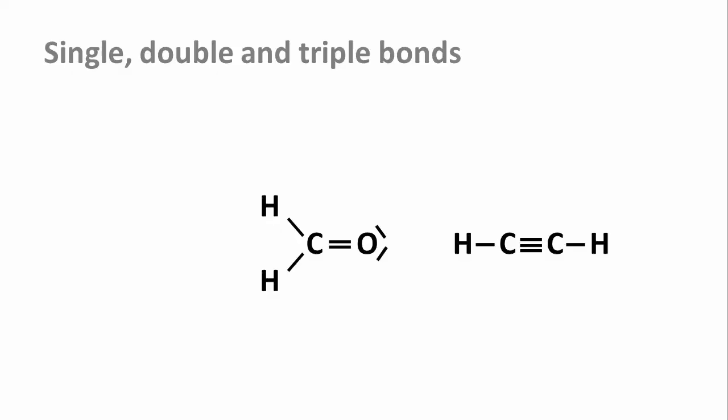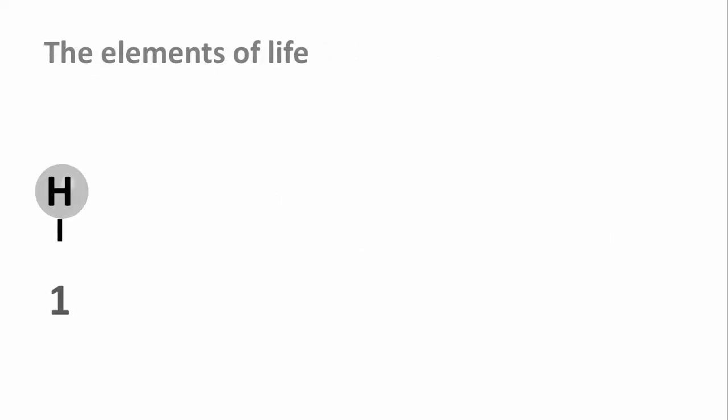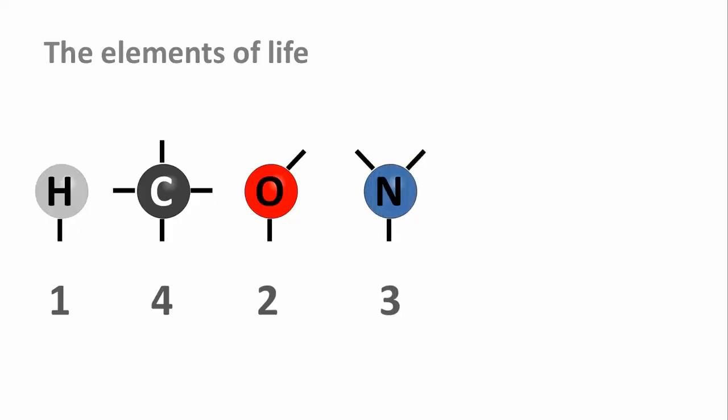For now, if we take away just one thing from this video, remember how many bonds each of the main elements of life can form: hydrogen 1, carbon 4, oxygen 2, nitrogen 3, sulfur 2, at least in the compounds that we're going to come across, and phosphorus 5. There's no point in memorizing this. When you draw molecular structures on paper, which I recommend, it'll soon become second nature to check that the correct number of bonds are all there.